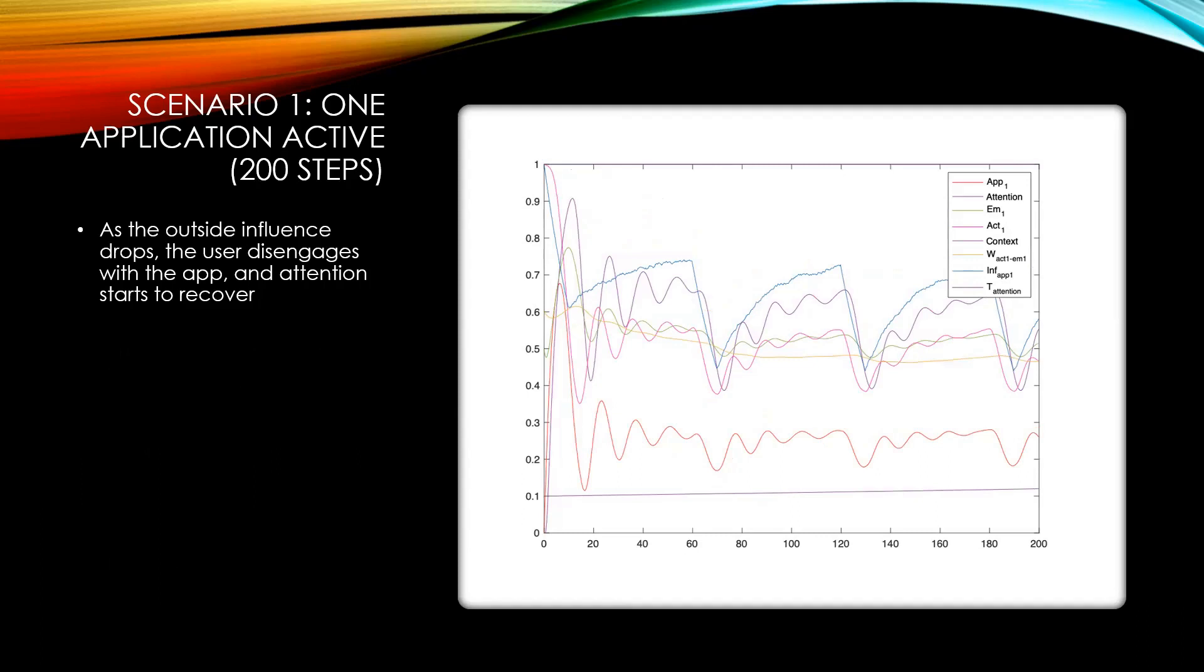If we look at the same simulation with a longer timeframe, we can see that there's influence from the outside, which are these random-looking things, which makes the user engage with the app more. Once those influences drop, the user disengages with the app. The pattern here is that throughout the usage, whenever the user engages with the app, the attention is taxed, which in turn lowers the emotion, while using the app—because the user likes it—raises the emotion. So with one app case, we see that emotion is converging towards the neutral state in the long run.